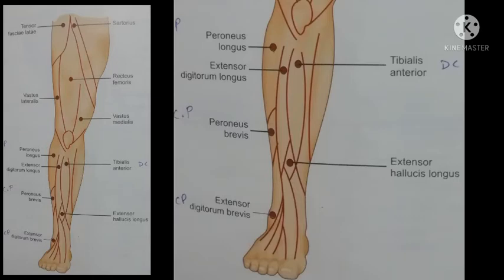The action of extensor digitorum longus is extension of the lateral toes. To stimulate the peroneus brevis muscle, the pan electrode should be on the lower two-thirds of the lateral leg. The action of peroneus brevis muscle is eversion of foot.